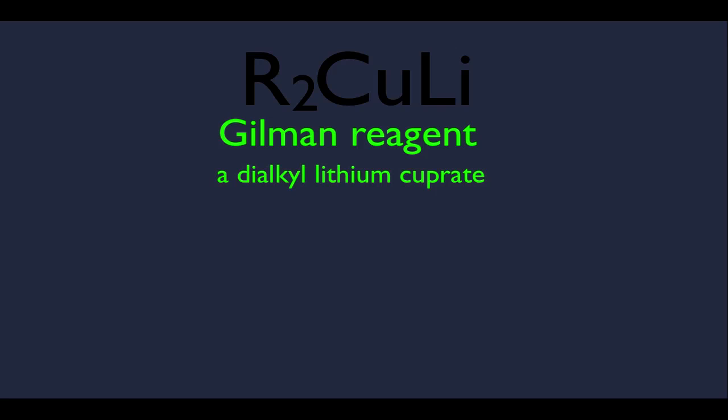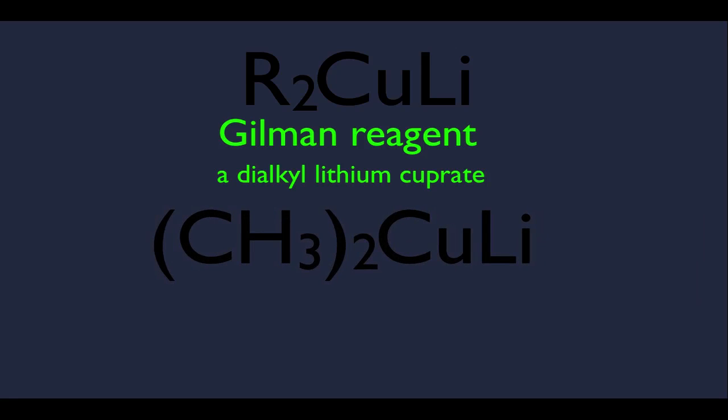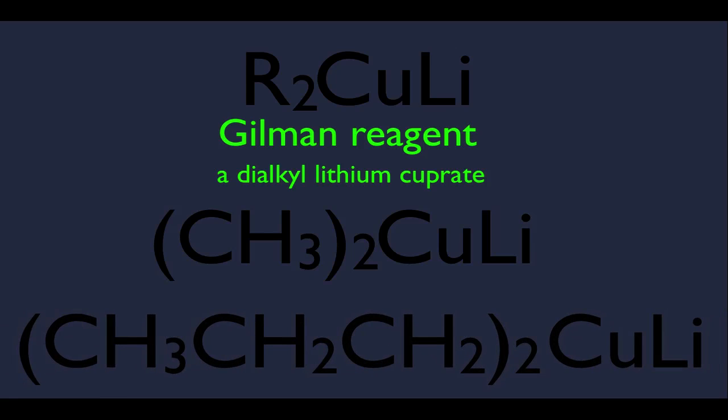Let's look at a specific example of a Gilman reagent. If the R group is only one carbon big, then it would be (CH3)2CuLi. We're not limited to this — we could make that R group bigger. In fact, here is a three-carbon chain, which is another possible Gilman reagent.